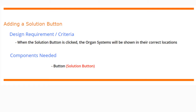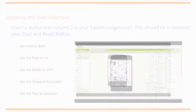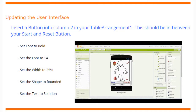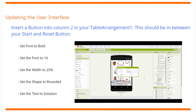The component we're going to need is a button that will be renamed to the solution button. To update the user interface, we're going to insert a button into column 2 of that table arrangement 1 that we previously added. This should be found in between your start and reset buttons. Once you add that button to your screen, go ahead and rename it to solution button.